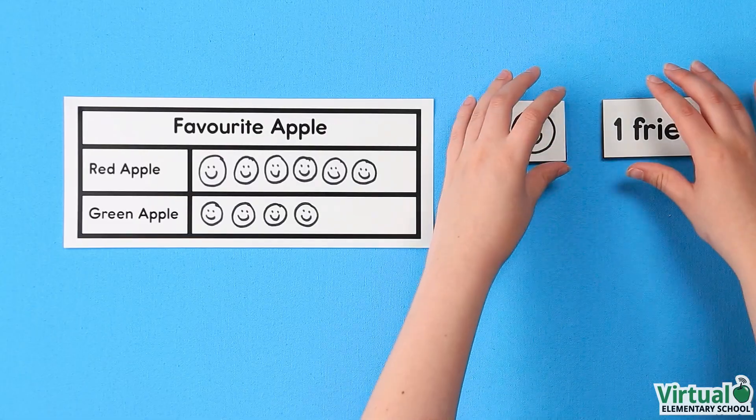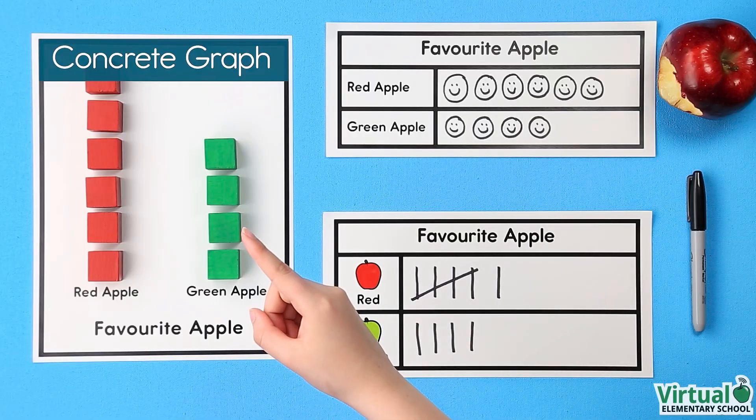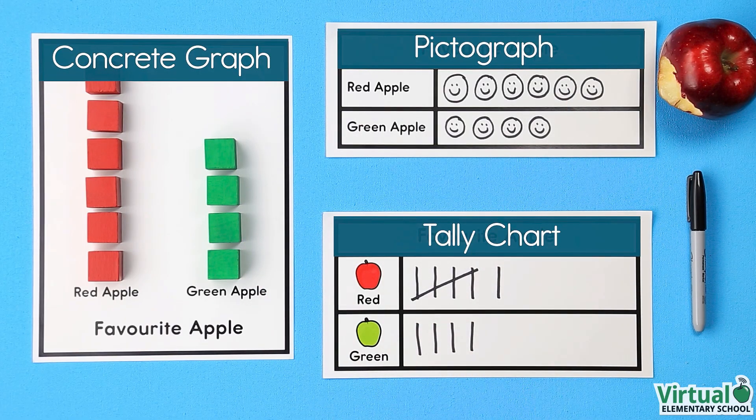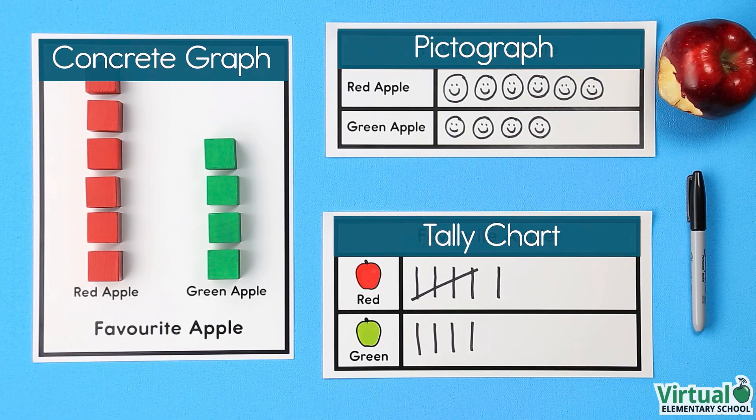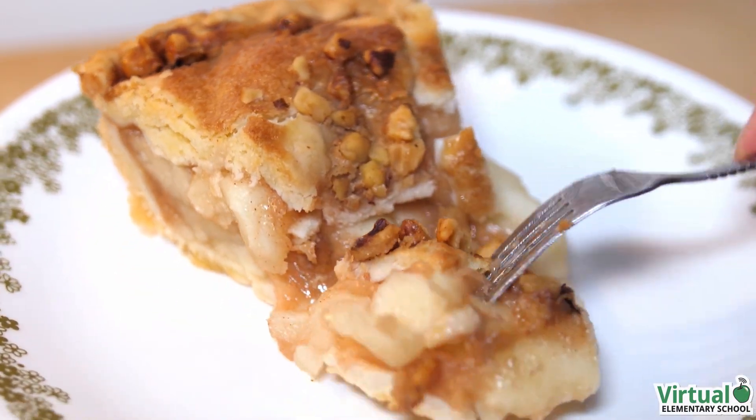There are many ways to show data with graphs and charts. We used a concrete graph, a pictograph, and a tally chart to show how many friends liked red apples and green apples. You know, all this talk about apples really makes me want some apple pie.